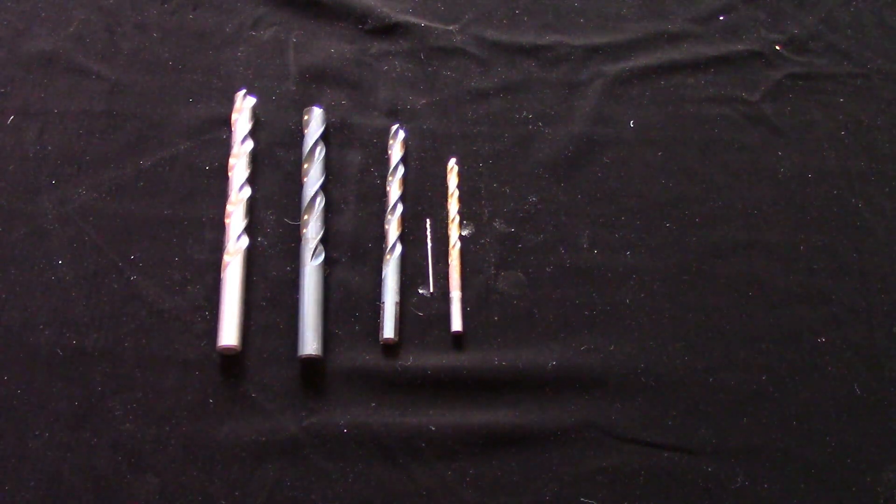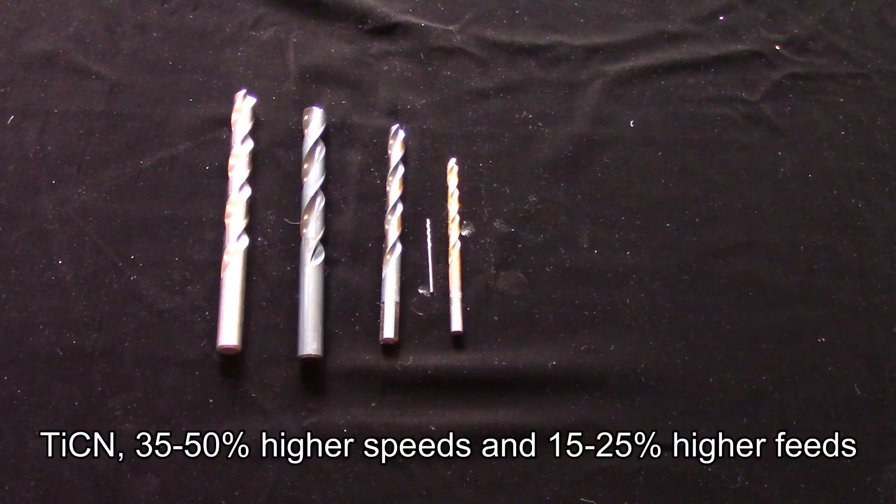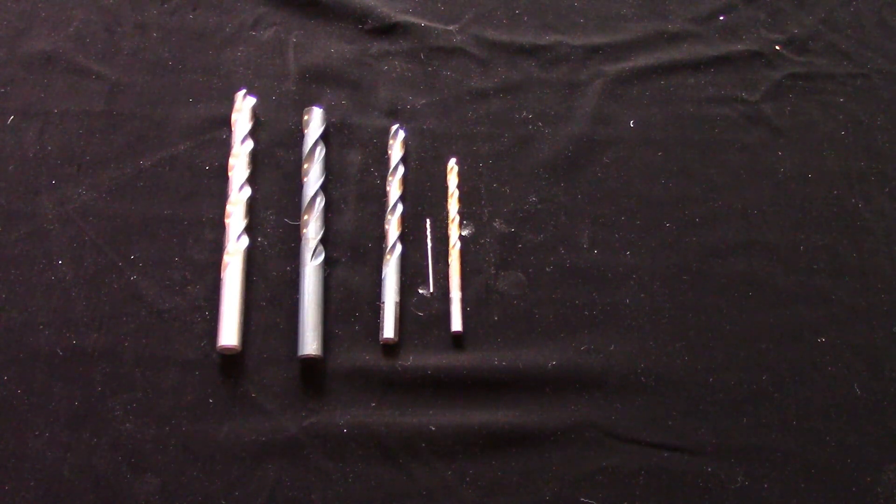There are several similar coatings that allow for even faster cutting speeds and feeds, and many of these are seen on end mills as well, such as titanium carbonitride, which is violet gray in color, and titanium aluminum nitride, which is violet black. That is not for machining aluminum, because it really likes to stick to it.